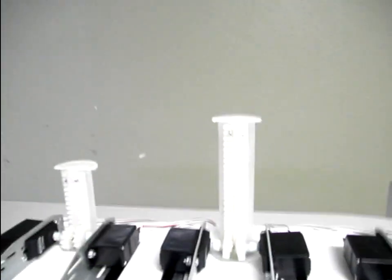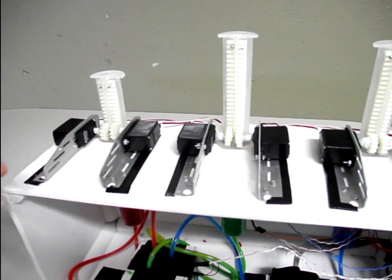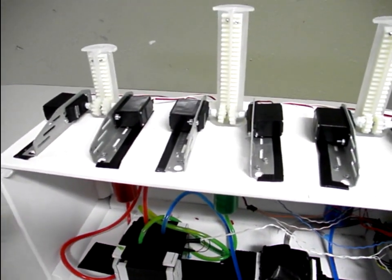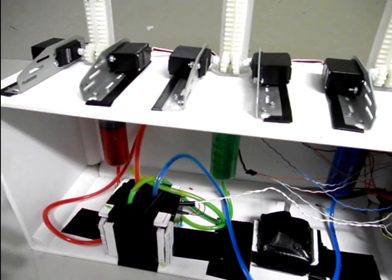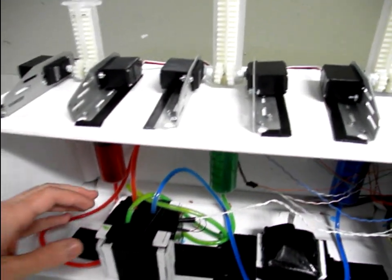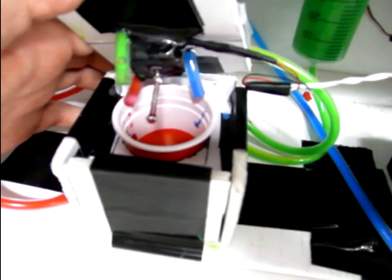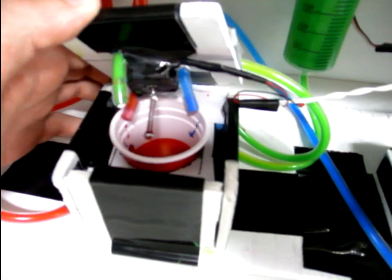So, once the servos have rotated a certain amount, it will empty the specified amount that is created by the Arduino into the mixing site here, which is this red Solo cup. After it's done pouring all the paint into that spot, it needs to be mixed.